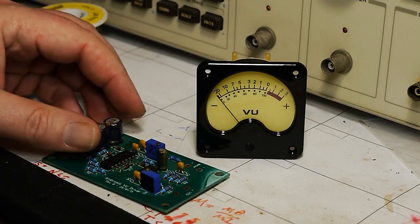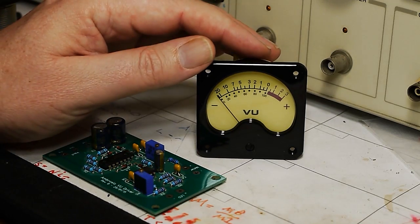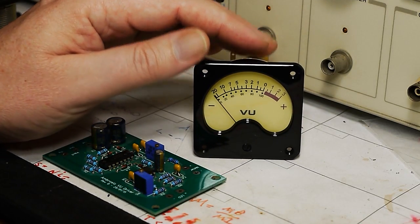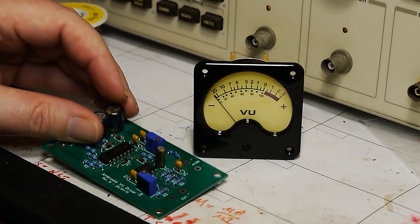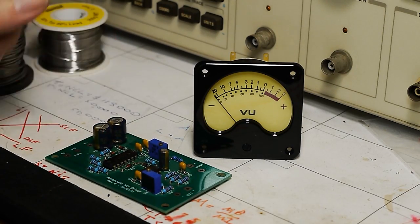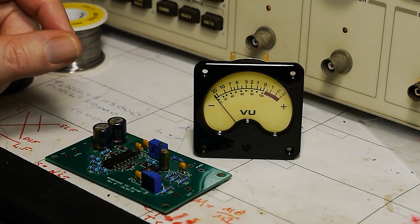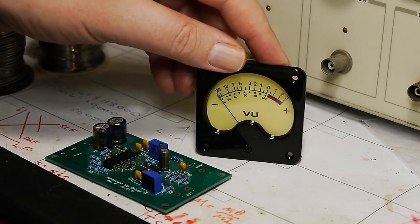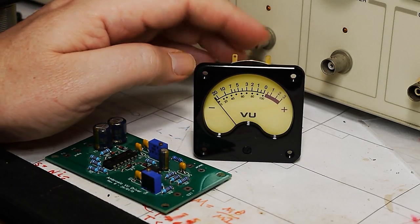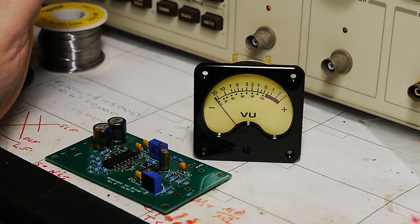In the previous video we looked at this driver board for the VU meters in my microphone preamp project, and I thought it would be nice to actually fire one up and put it through its paces and see a bit of color and movement. But in the meantime I've just discovered that I've got a couple of these meters where I've yet to fit the red LEDs, so I thought I'd start by doing that.